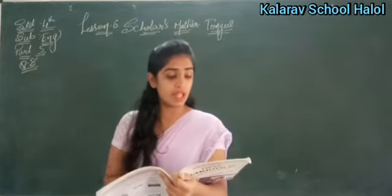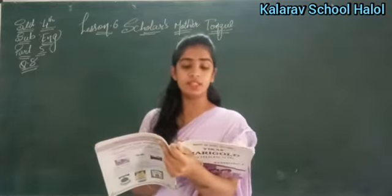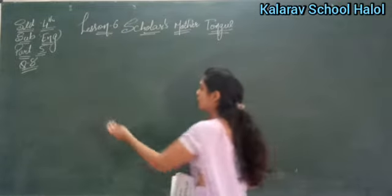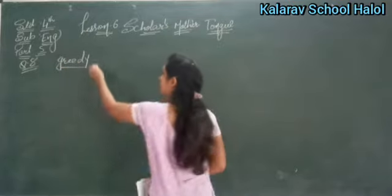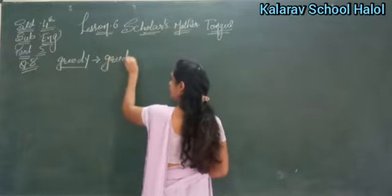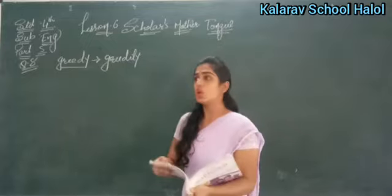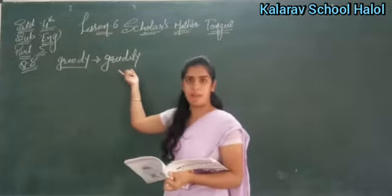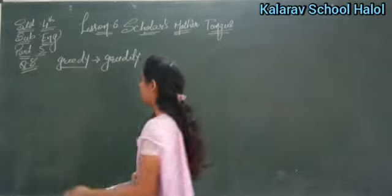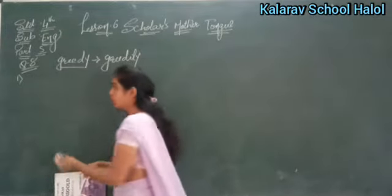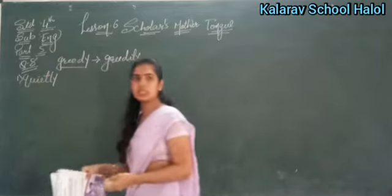तो हम adverb कैसे बनाते हैं? देखो, the little boy example दिया है — 'The little boy looked dash at the sweets.' अब आपको जो bracket पे word दिया है उसको adverb बनाना है। तो 'greedy' दिया है। The children said dash — so you have to put the word in the bracket: quiet. How do you put it? Quietly.